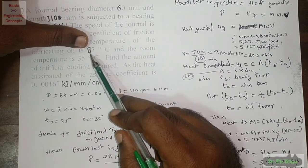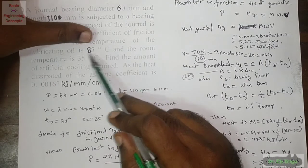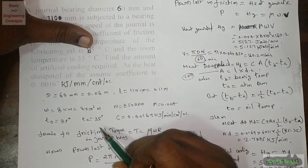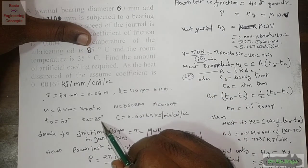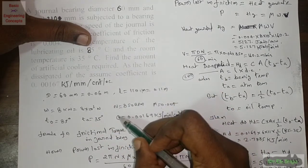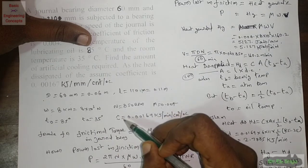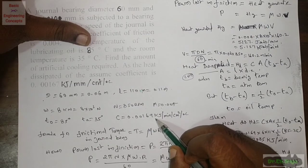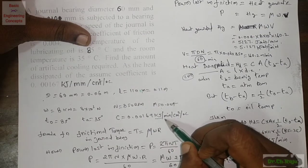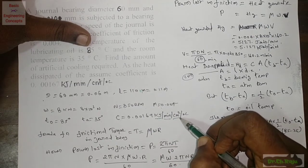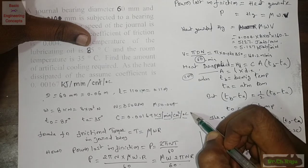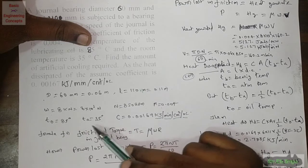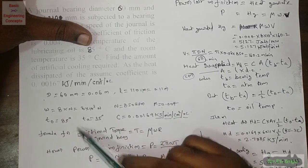The temperature of the lubricating oil is 85 degrees C and atmospheric temperature is 35 degrees C. The heat dispatch coefficient is 0.00167 kilo joules per minute per centimeter square per degree C. Note that the units are in centimeter square and degrees C, so there is no need to convert temperatures — it is sufficient to maintain temperatures in degrees C only.